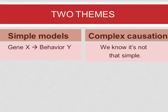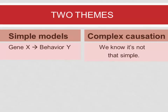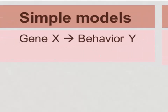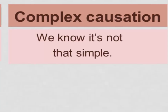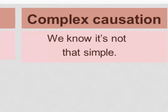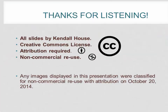To summarize: when evolutionary anthropologists think about genes, there are two themes. First, simple models suggest that gene X causes behavior Y. Second, we're aware that is far too simple and causation is likely much more complex. The question is simply whether that simple model can predict and explain the behavior without understanding the complex causes. Thank you for listening.